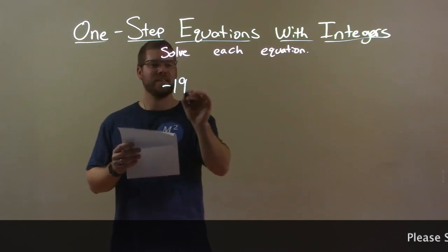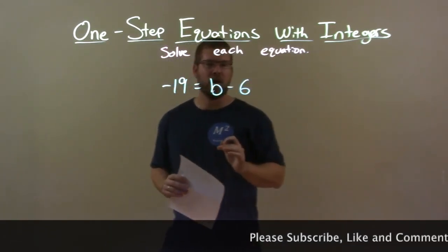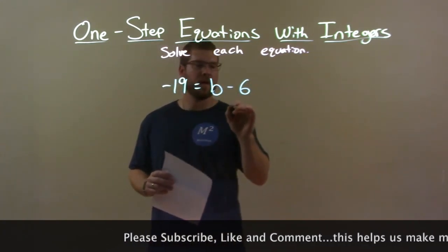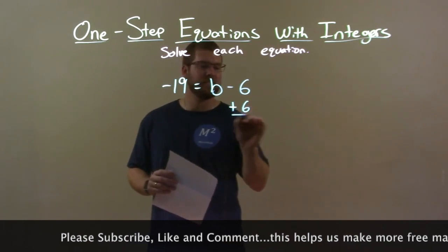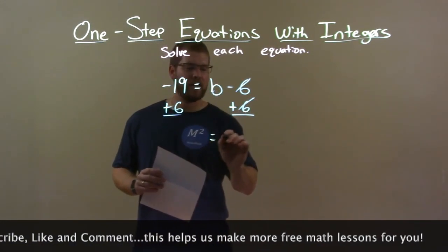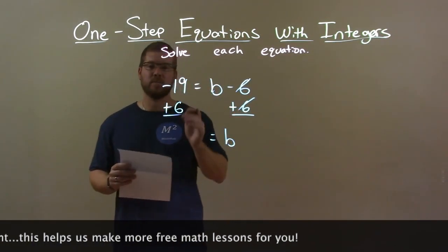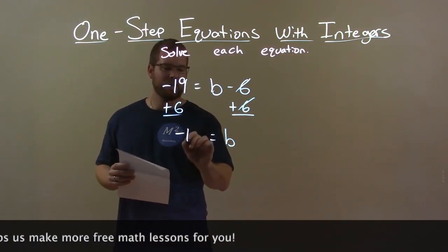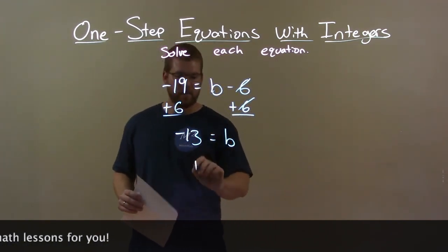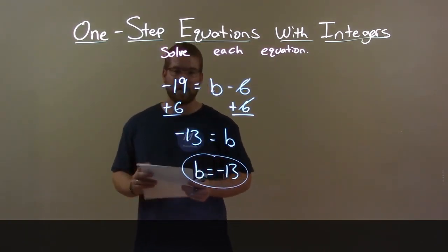Negative 19 equals b minus 6. I want to get b by itself — there's subtract 6 right next to it. To bring it over, I do the opposite, which is addition. I add 6 to both sides. The 6s on the right cancel, and I'm left with b by itself. Now I have negative 19 plus 6, which comes out to negative 13. So if negative 13 equals b — flip that around — b equals negative 13, and there we have our final answer.